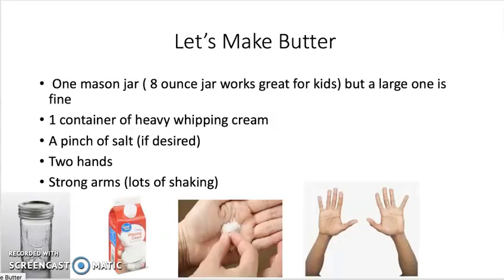Let's make butter! This is a super fun activity, and what we are going to try to do is see if we can cause a liquid to change into a solid. You will need one mason jar — an 8-ounce jar works great for kids, but a large one is fine — one container of heavy whipping cream, a pinch of salt if desired, two hands, and strong arms for lots of shaking.